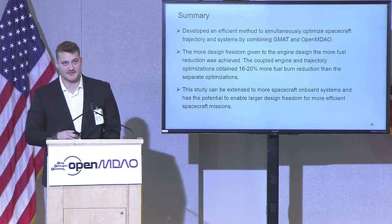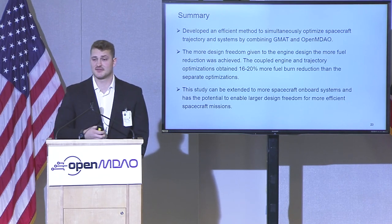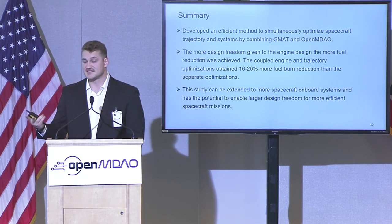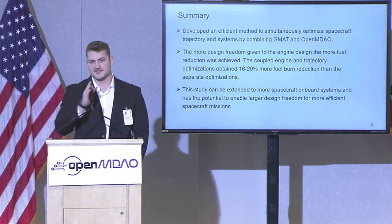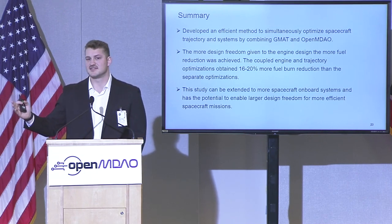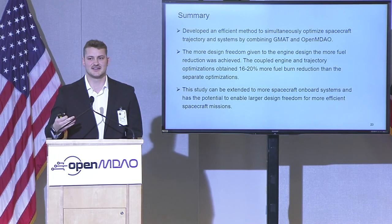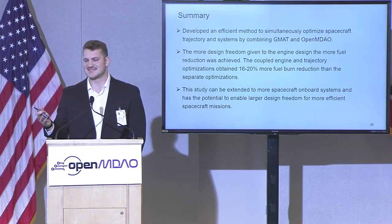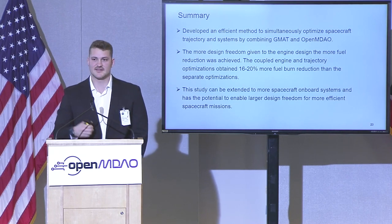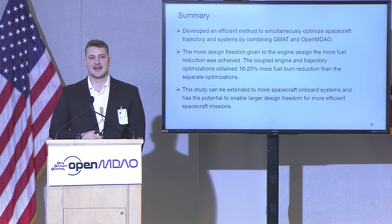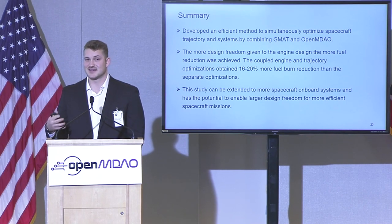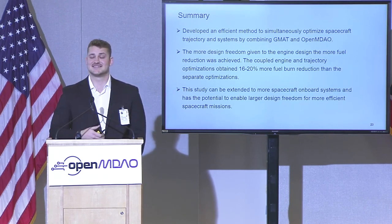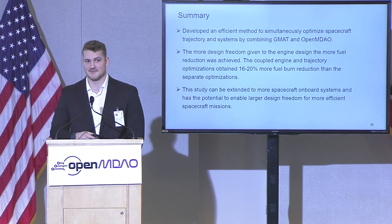In summary, we developed an efficient method to both optimize a spacecraft system's trajectory and system at the same time. As we saw from those trends, the more design freedom we give the optimization, the better fuel burn reduction we will actually achieve — ranging between 16 to 20% better than those separate optimizations. We do plan to add more spacecraft systems into the coupled optimization framework to enable larger design freedom for more efficient spacecraft missions.